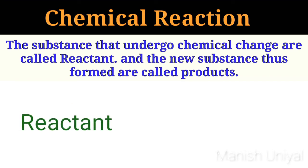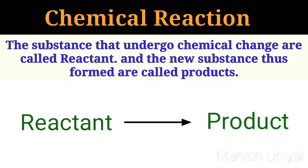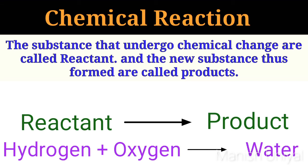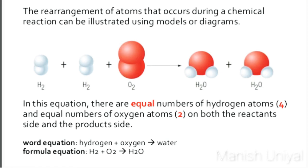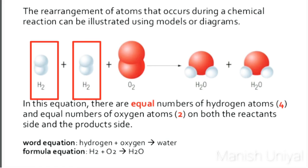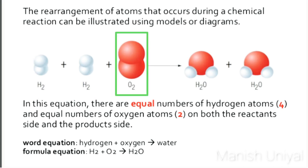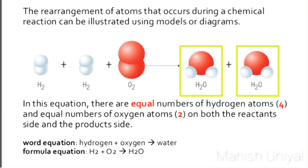On the left hand side we represent the reactant and on the right hand side we represent the product. For example, hydrogen reacts with oxygen to form water. In this equation, two molecules of hydrogen combine with one molecule of oxygen to give two molecules of water. You can see two hydrogen molecules in the reactant side and one oxygen molecule in the reactant side, and in the product, two H₂O molecules are there.